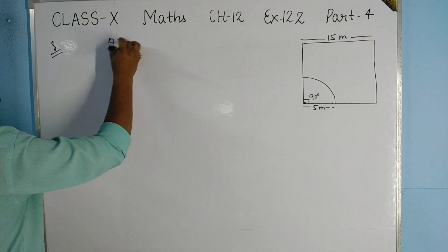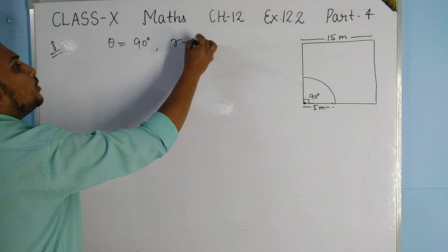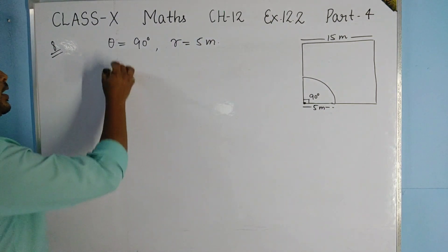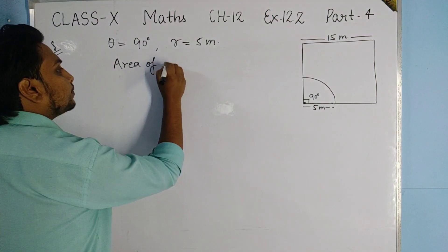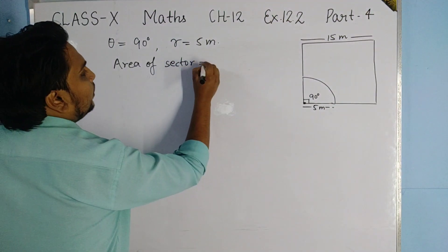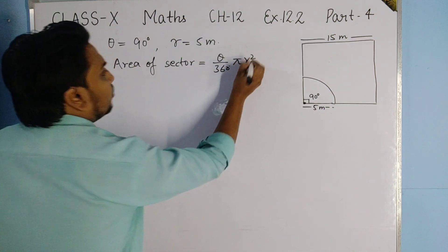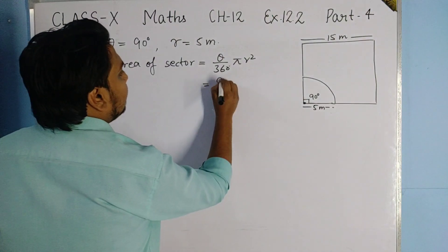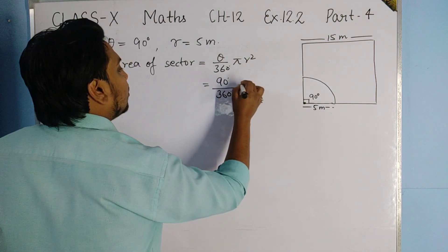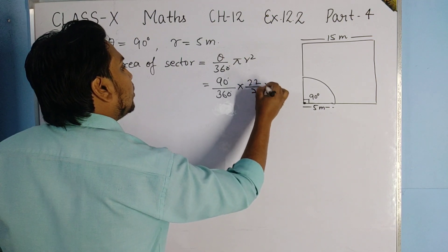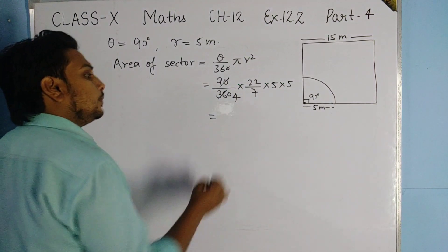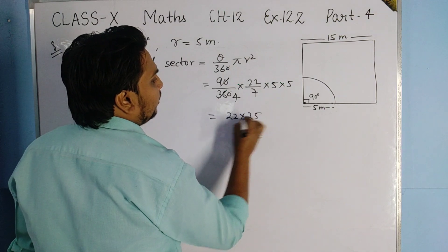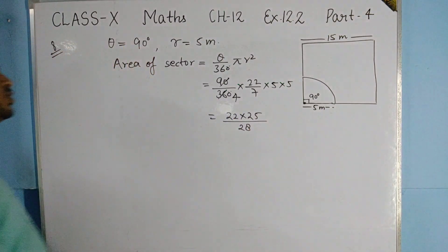The area the horse can graze is found using the sector formula: theta/360 × πr². With theta = 90° this simplifies to (1/4) × (22/7) × 25 = 22 × 25/28. Solve it to get your answer.